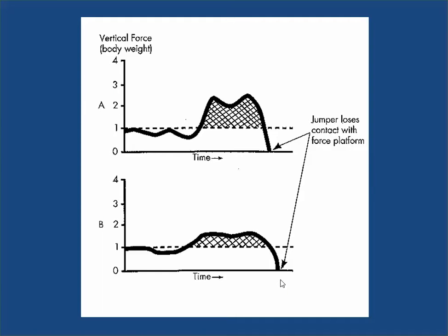But for a maximal jump, you do want to sum the ankle, knee, and hip joint torques. By summating these joint torques, you would apply the largest impulse to the ground that you could. The maximal impulse will result in maximum momentum. Momentum is mass times velocity, therefore your takeoff velocity would be maximal in the top figure and submaximal in figure B.